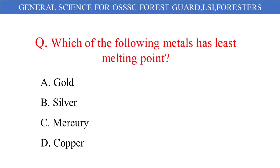Which of the following metals has the least melting point? The given options are: A. Gold, B. Silver, C. Mercury, D. Copper. And the correct answer is option C: Mercury.